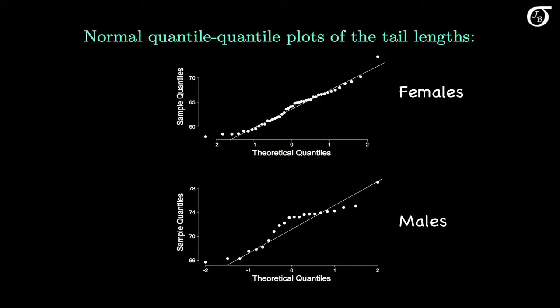Here are the normal quantile quantile plots for males and females. And recall that if the data is approximately normally distributed, the points in a normal quantile quantile plot fall close to a straight line. For the female lizards, the plot is looking pretty good. These small tail lengths over on the left are perhaps not as small as we'd expect under normality, but I don't think that's a big problem.